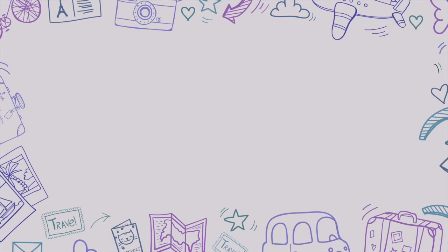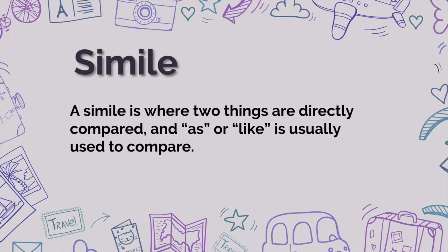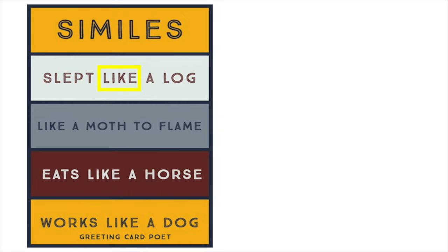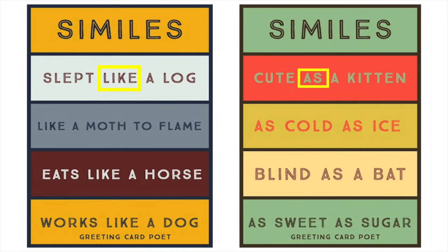Let's take a look at the next literary device: simile. A simile is where two things are directly compared, and 'as' or 'like' is usually used to compare. Whenever you see 'as' or 'like,' that's a simile. For example: he eats like a horse, I work like a dog, she's as cute as a kitten, Canada is cold as ice, I'm becoming blind as a bat, she is as sweet as sugar. You can see 'as' on the right-hand side and 'like' is used on the left-hand side.